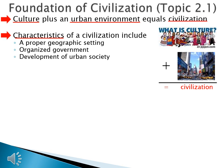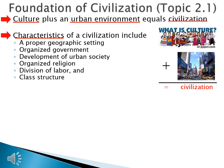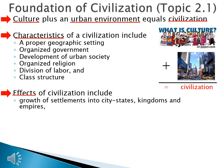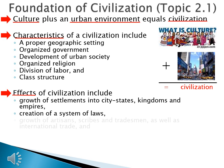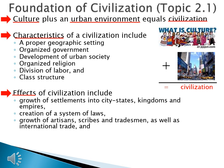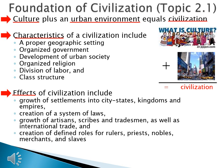We also learn that civilizations have characteristics and effects. Characteristics of a civilization include a proper geographic setting, organized government, development of urban society, organized religion, division of labor, and class structure. If you see these things in your society, you might have a civilization. The effects of civilization include growth of settlements into city-states, kingdoms, and empires; creation of a system of laws; growth of artisans, scribes, and tradesmen; international trade; and creation of defined roles for rulers, priests, nobles, merchants, and slaves.